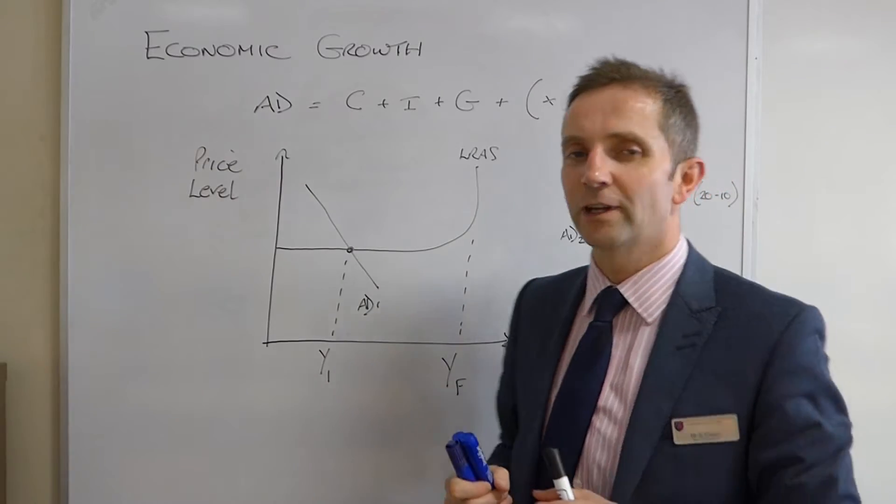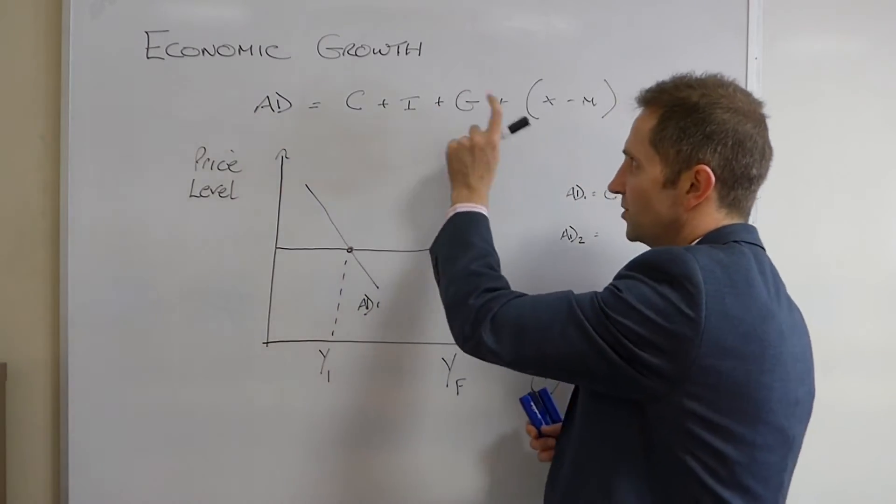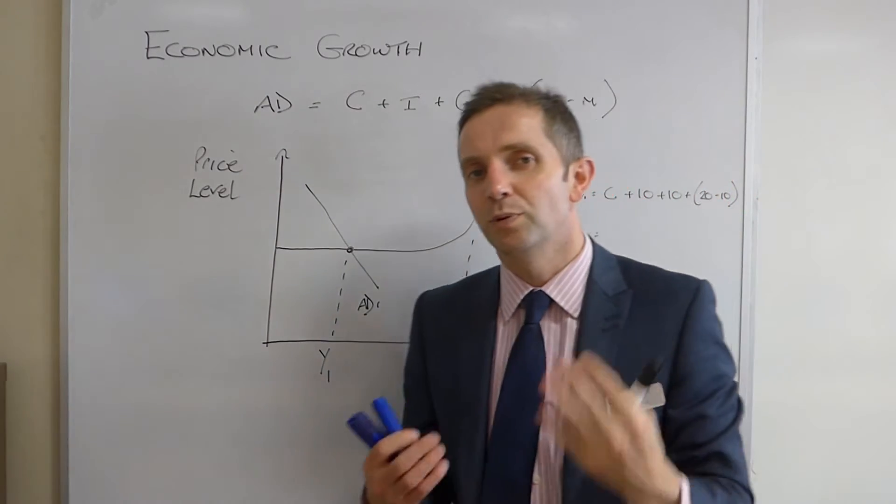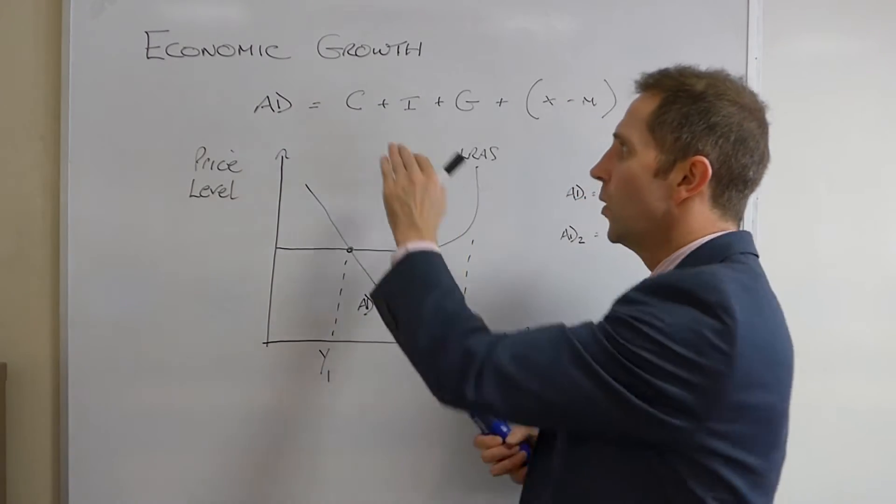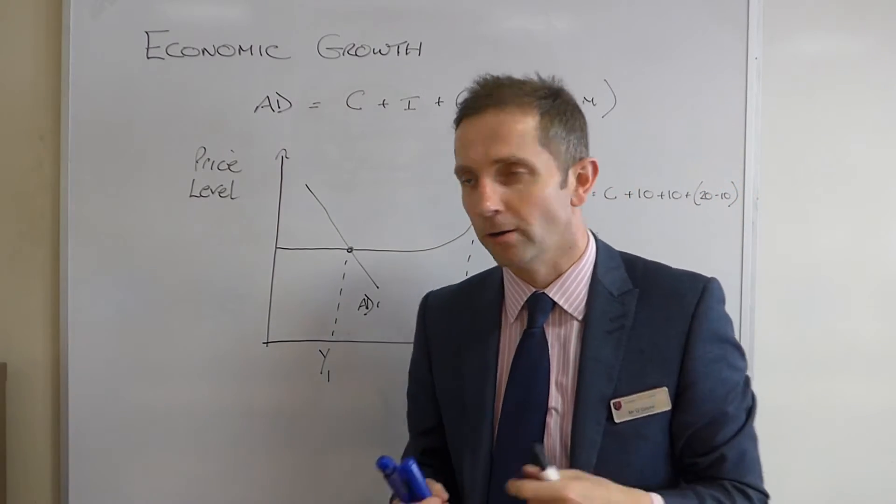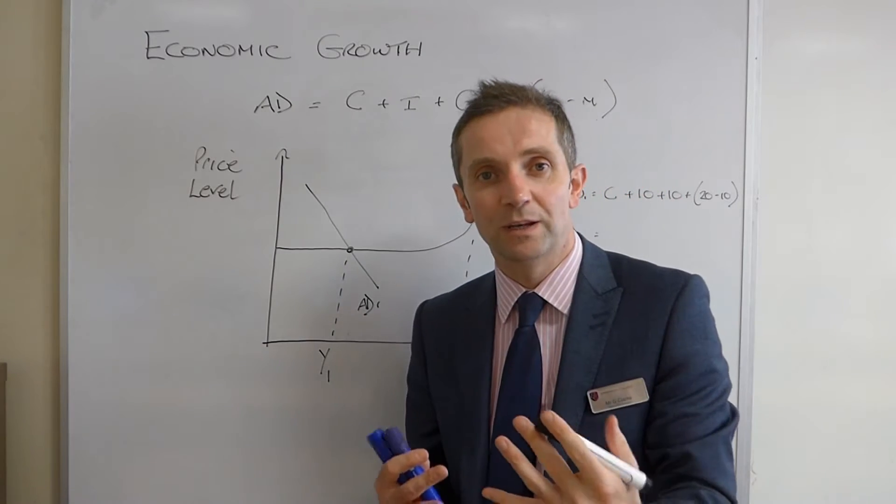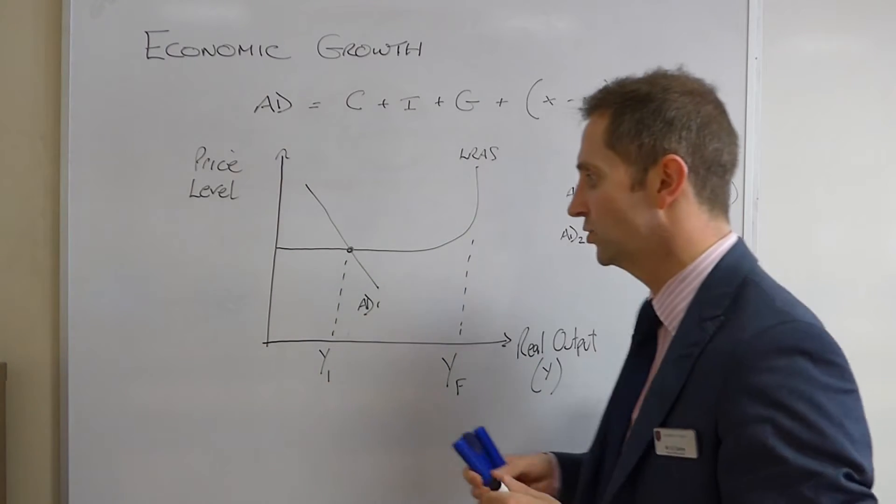So, let's not forget ladies and gentlemen, AD, C to the I to the G to the X minus M, C plus I plus G plus X minus M. In the previous video we considered what each of these components actually are. So, consumption expenditure, investment expenditure, government expenditure, export expenditure, and import expenditure.